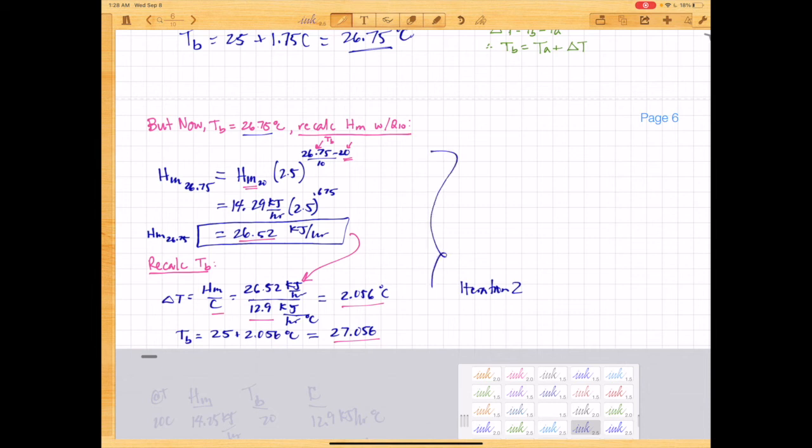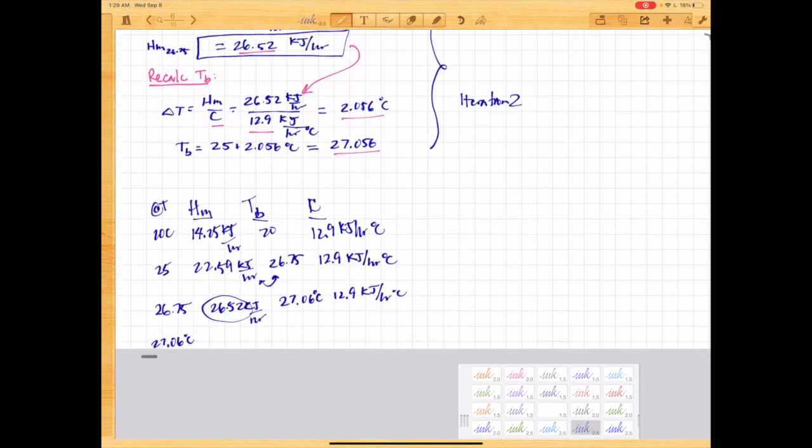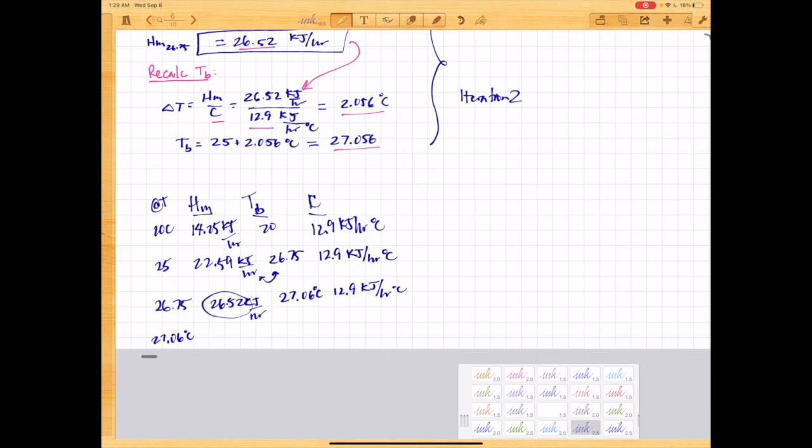So now you see that it increased, but not as much. So if we write it out in a table, we can see that at 20, we have our SMR. So starting from ambient of 25, we have a metabolic rate of 22.59, which then raised body temperature to 26.75. So if we recalculate it from 26.75, our new heat of metabolism is 26.52. Now calculating body temperature from that, we have 27.06. So you can keep going.